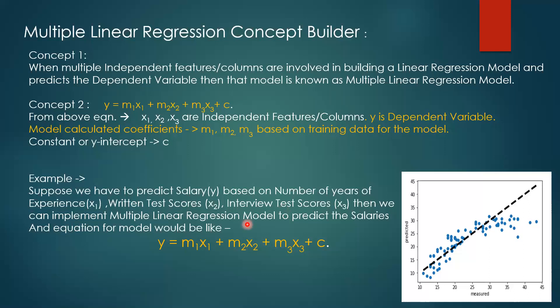In my next class, I will also talk about the concept of polynomial linear regression and show you the difference between all three machine learning algorithms. Here is the general equation for multiple linear regression with three columns: X1, X2, and X3 are the independent features or columns, and Y is the dependent variable — the value we will be predicting.